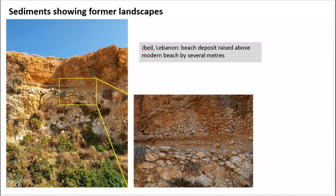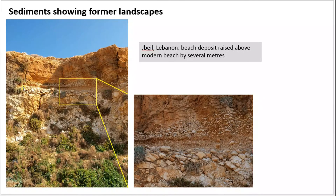In addition to the geomorphological evidence, some sediments can also give us a lot of information about the past landscape, particularly when we find types of sediment which are not in the location in which they were originally deposited — where they show that the environment in the past is completely different to what it is today. This is an example from Lebanon, an exposure on a coastal cliff where we can see deposits of rounded pebbles and cobbles which look very much like beach material today. This indicates that sea level was once much higher and deposited an ancient beach several meters above the present beach.